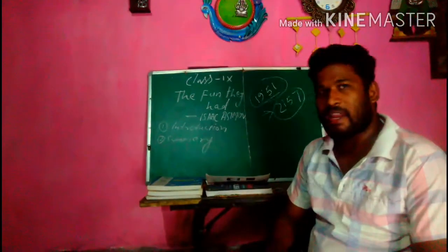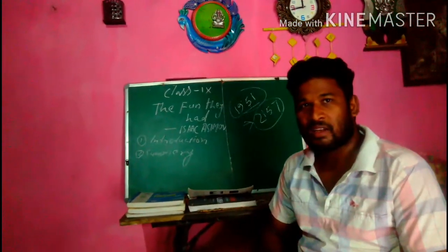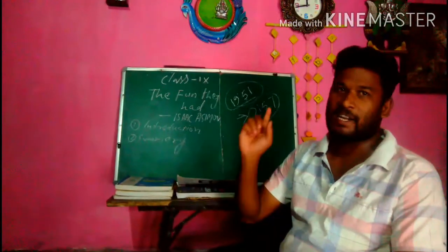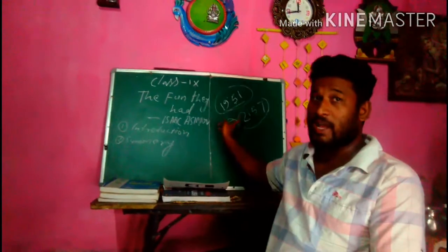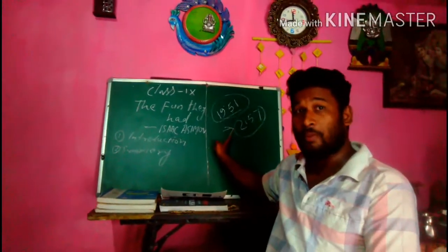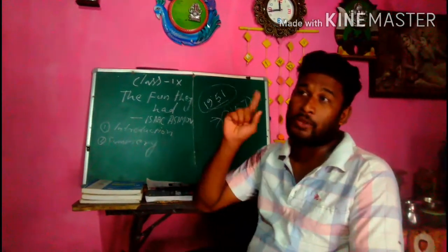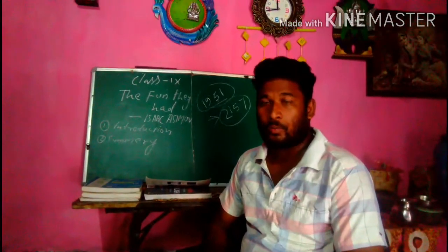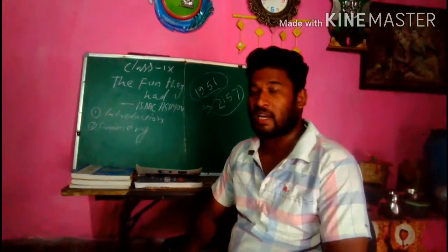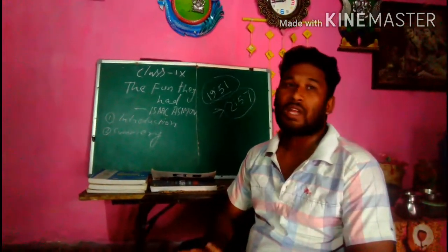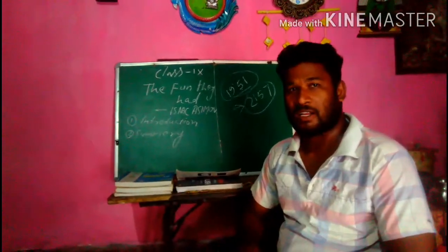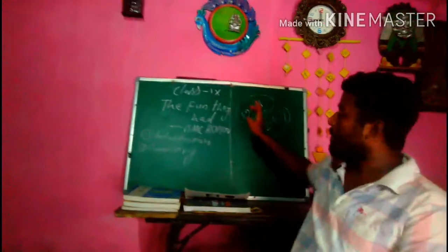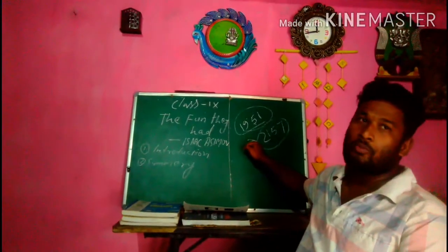Today we have a real human teacher. But Tommy and Margie are shocked by what they read in the diary — that there used to be a human teacher with a number of real books. At their time, there are no human teachers; they have robot classes, mechanical teachers.